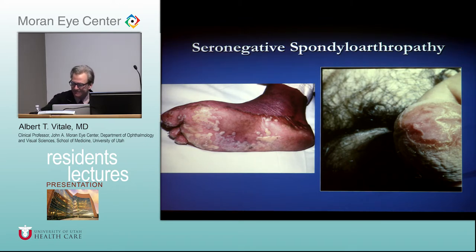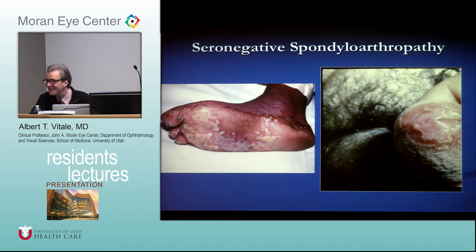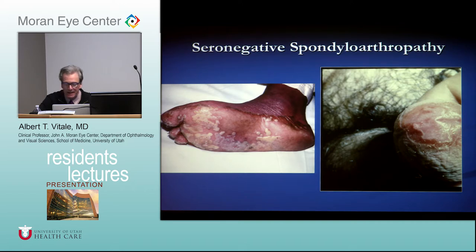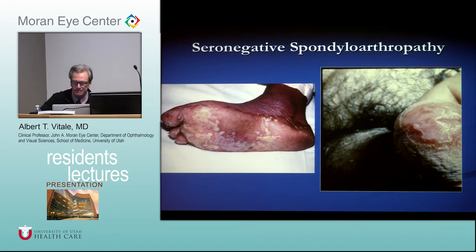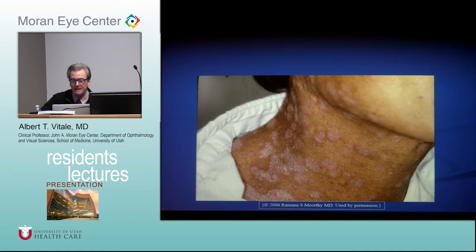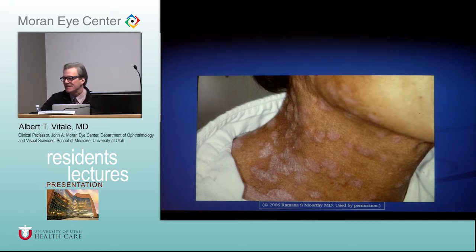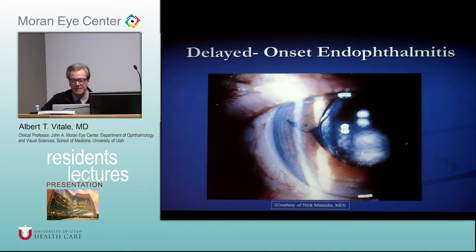The condition previously known as Reiter's syndrome — now called reactive arthritis — is thought to be caused by enteric bacteria that precipitate disease in a genetically predisposed person; organisms causing diarrhea can trigger it. On the theme of seronegative spondyloarthropathies, they may show you a clinical picture of psoriasis, so psoriatic arthritis is something you have to think about.